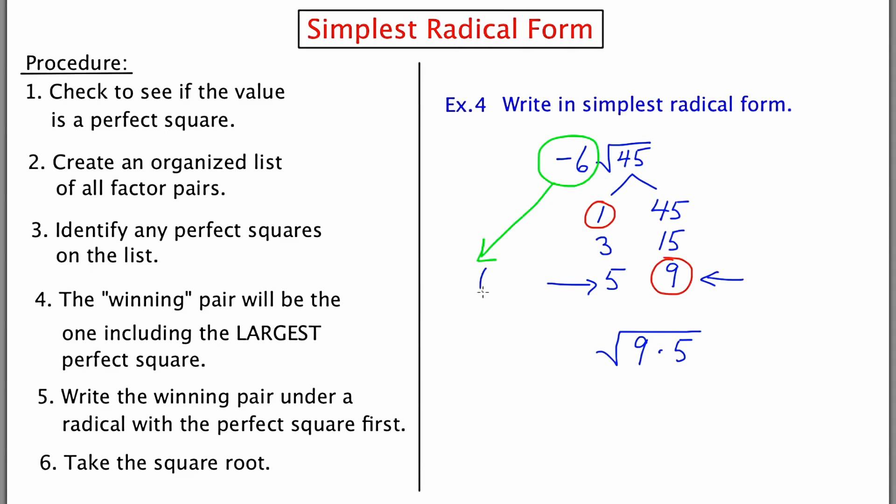Let's not forget about the negative 6 that was out in front, so I'm going to bring that down here. And now we'll put it all together. We have a negative 6. We have the square root of 9, which is 3. And we have the square root of 5, which can't be broken down any further. Putting this together, we have negative 18 root 5.